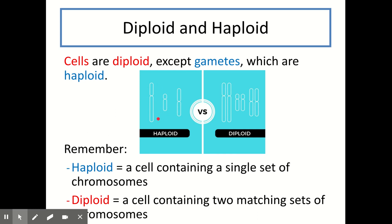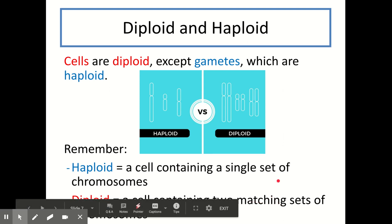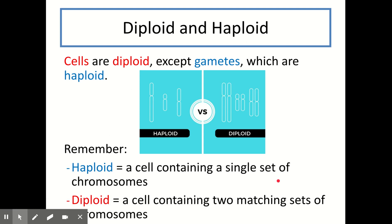A diploid cell contains two matching sets of chromosomes. For example, a diploid version of the earlier cell would have six chromosomes — two matching chromosomes of each size. One way to remember diploid is that 'di' means two, so diploid cells have two matching sets of chromosomes inside their nucleus.